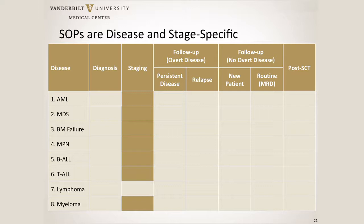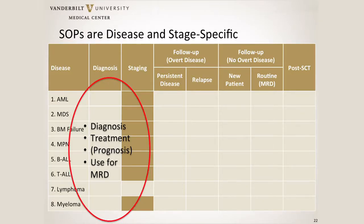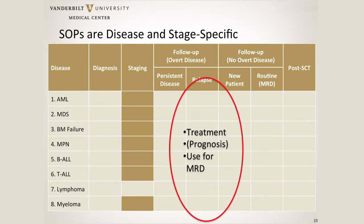This is a grid of how those SOPs appeared, with different diseases on the y-axis and different stages of disease on the x-axis. All stages here, with the exception of staging marrows in lymphoma, are overt disease; everything on the far right is no overt disease. The testing when looking for MRD is different than at diagnosis. At diagnosis, we need those tests that help make the diagnosis, and in hematolymphoid neoplasms the criteria for diagnosis in many cases is based on molecular or cytogenetic information — so we need to get that up front.